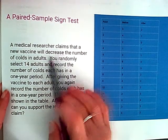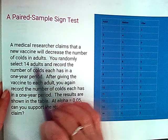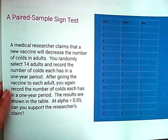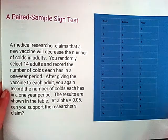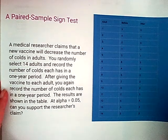So this is a medical researcher claims that a new vaccine will decrease the number of colds in adults. You randomly select 14 adults and record the number of colds each has during a one-year period. The results are shown in this table.